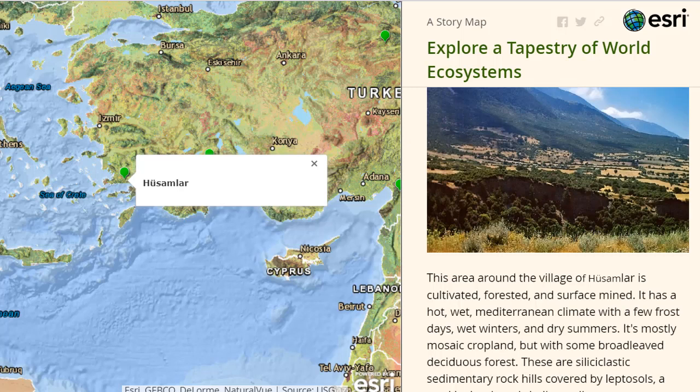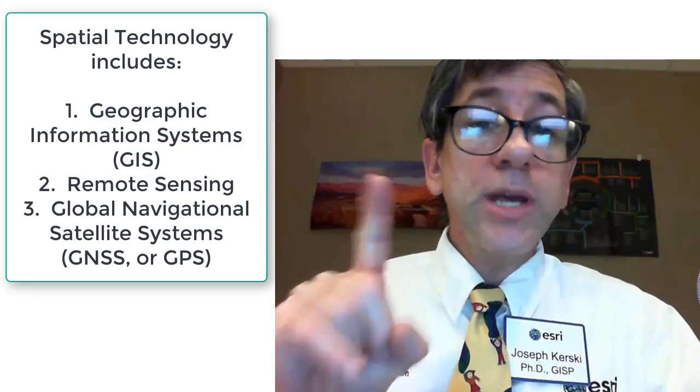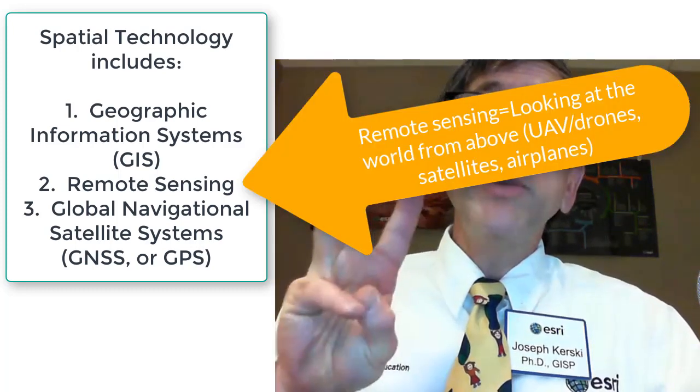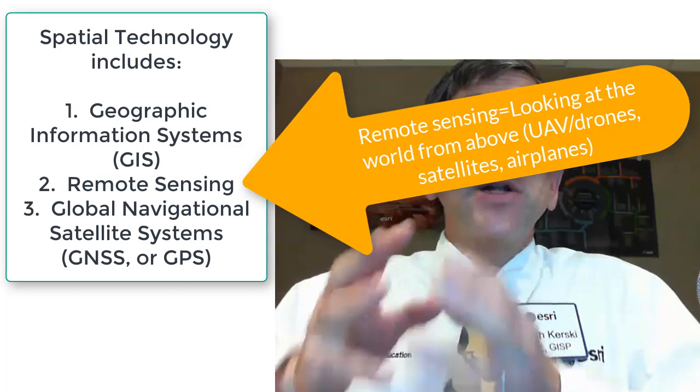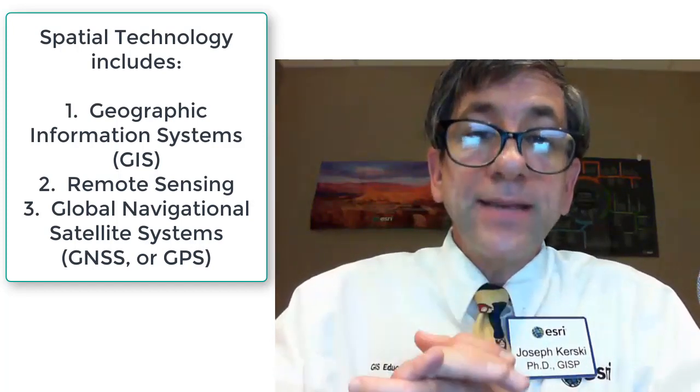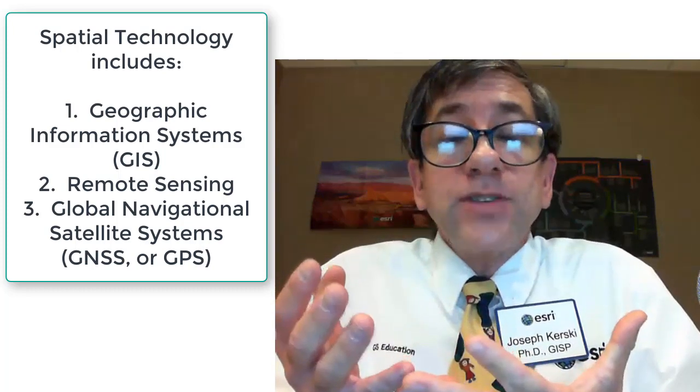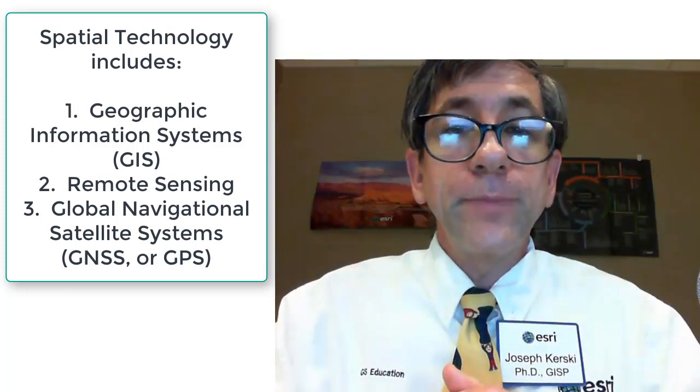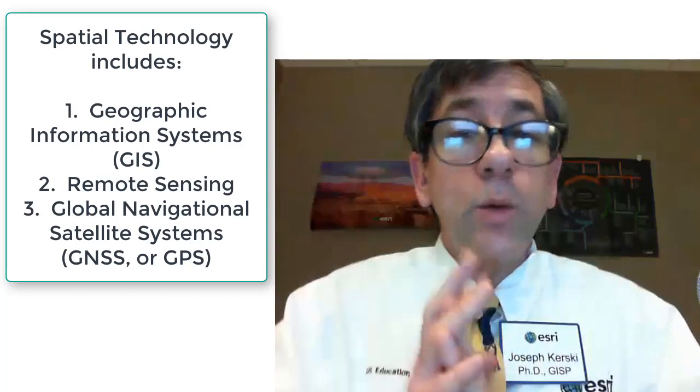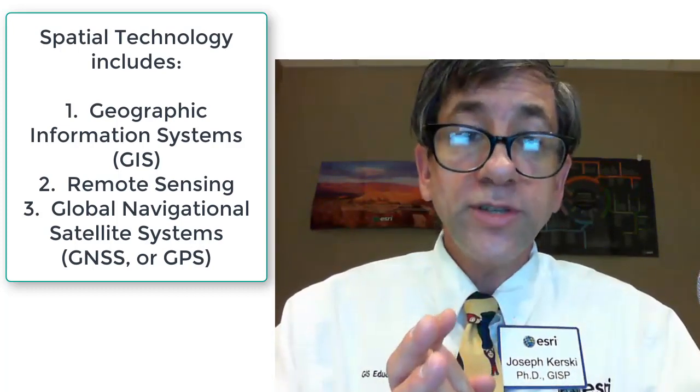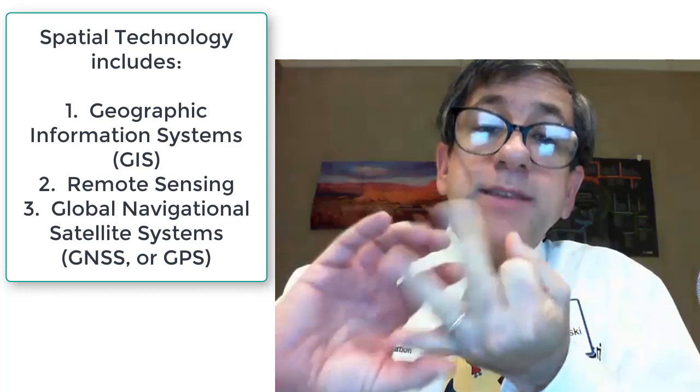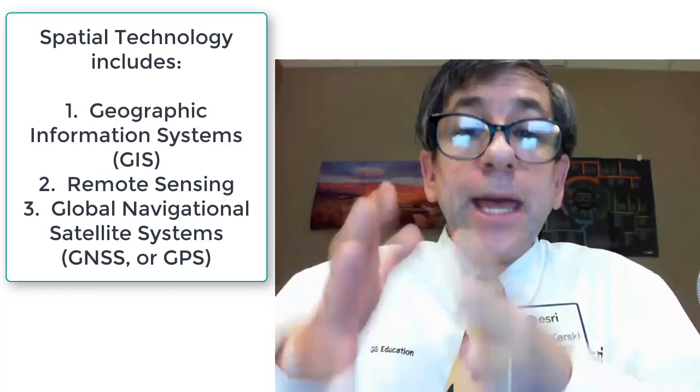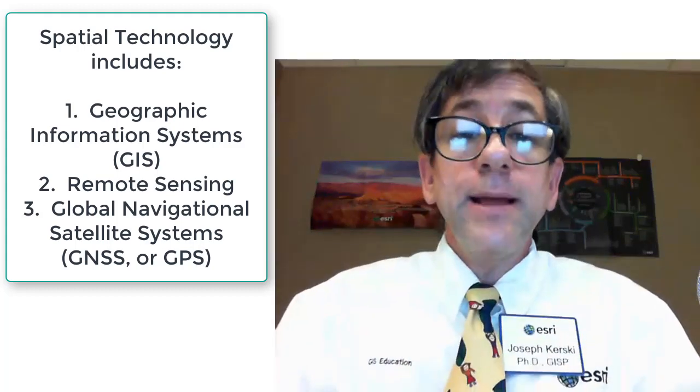Digital maps created with and viewed within spatial technology can be combined with other maps and information, charts, stories, and multimedia. Let's talk about components of spatial technology. Spatial technology includes geographic information systems or GIS, remote sensing, and global positioning systems GPS, or more accurately global navigational satellite systems or GNSS. GIS is oftentimes referred to as geotechnologies or geomatics depending on what part of the world you are in.